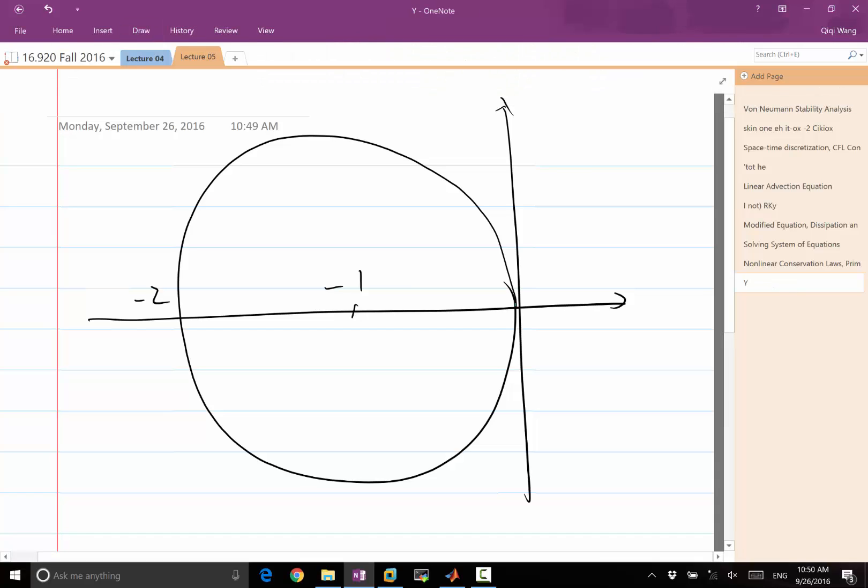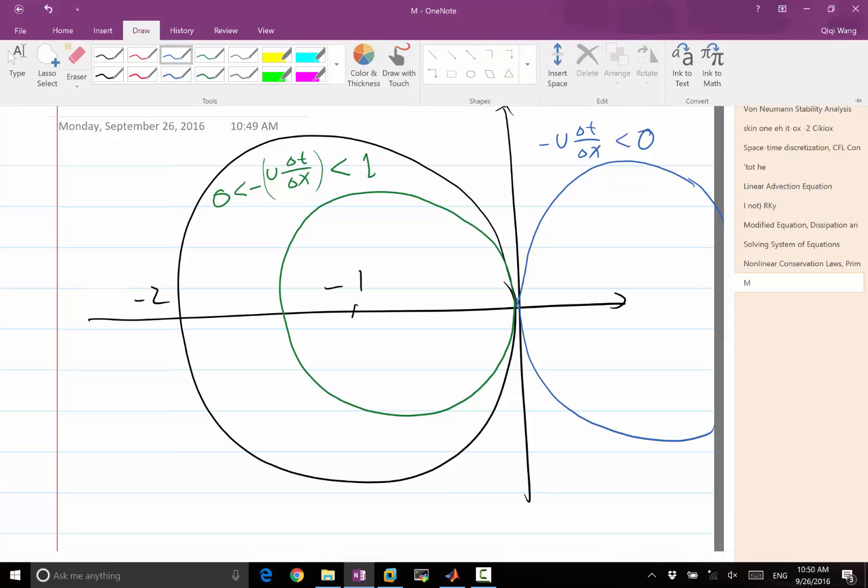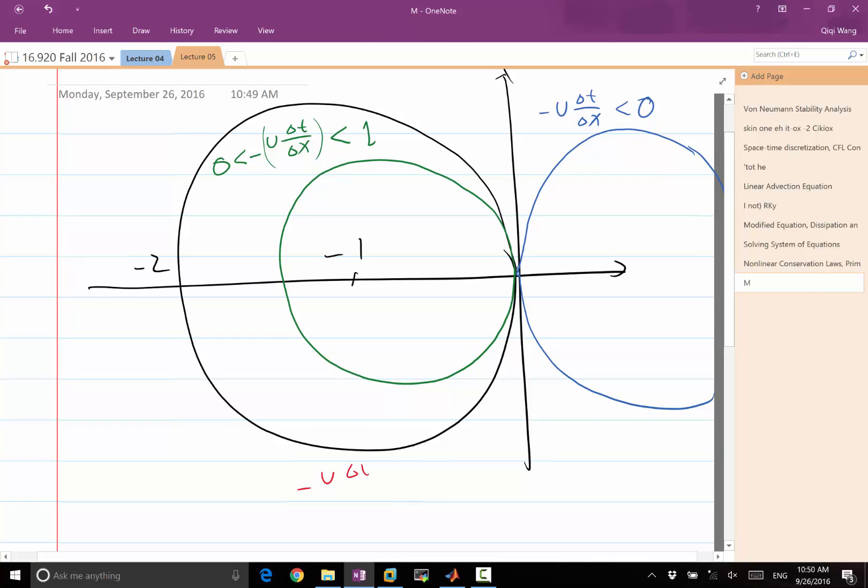So again, let's draw the stability region of forward Euler like this, minus 2, minus 1. So let's draw the good case. So this is minus u times delta t over delta x. In this case, this is called the CFL number. The CFL number is within 0 and 1. So this is the green circle. The other case is minus u delta t over delta x is actually less than 0. It'll flip the green to the blue side. So it'll be a circle over here, which is completely unstable.